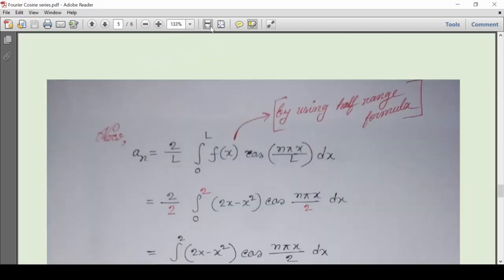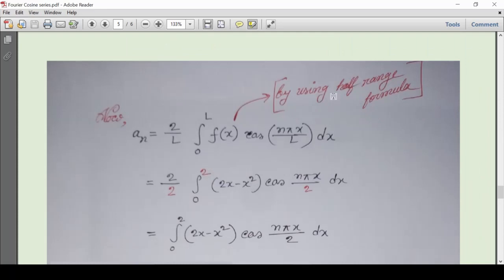Similarly, I have tried to find the second coefficient a_n, which equals 2/L times the integral from 0 to L of f(x) cos(nπx/L)dx.